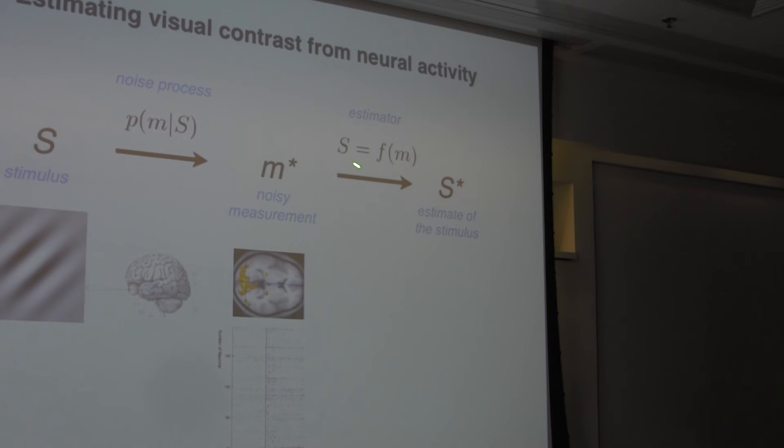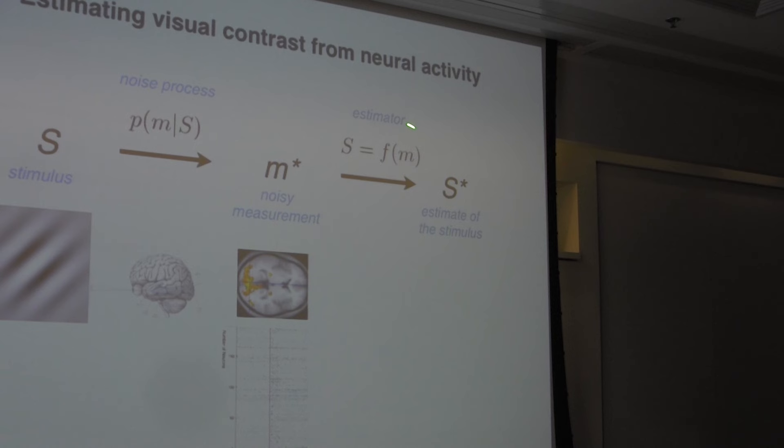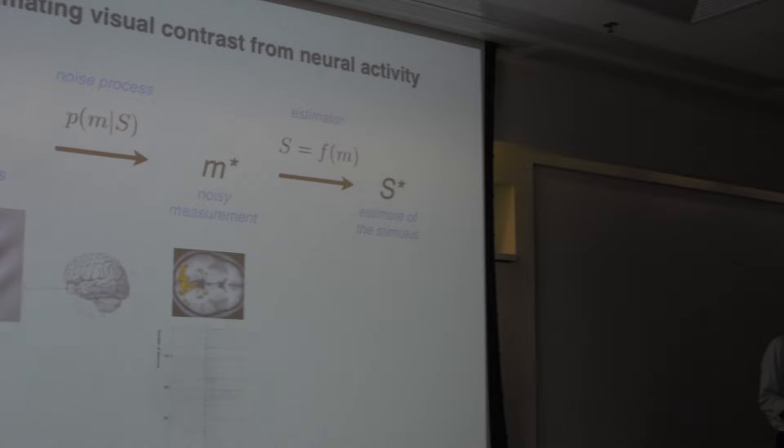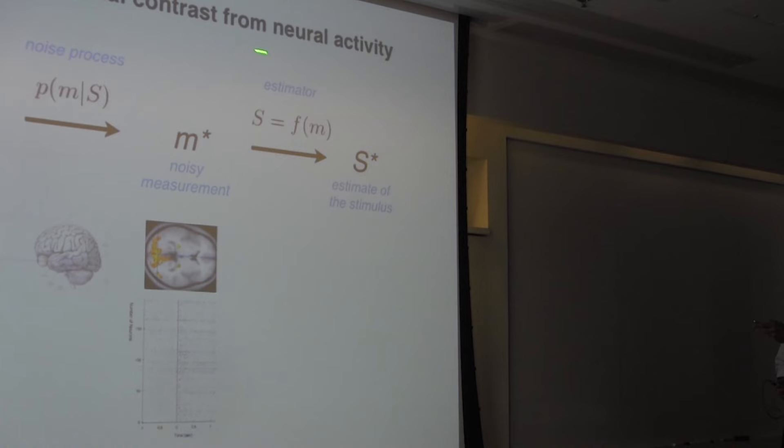We always want to keep in mind that we're assuming the stimulus is not known — otherwise there's no point doing any experiment. The idea is that we don't know what it is, we make a measurement, and then we try to figure out what it is. The goal is to come up with both a good measurement device — which for the brain is what evolution tries to do — and better ways of reading out that information to make estimates about the state of the world.